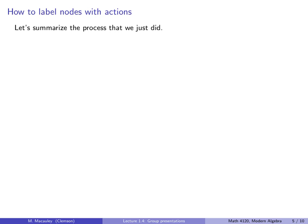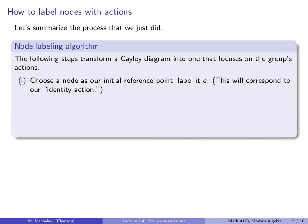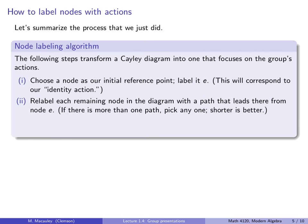Let's summarize the process that we just did. Let's call it the node labeling algorithm. The following steps transform a Cayley diagram into one that focuses on the group's actions. First of all, choose a node as our initial reference point and label it with E. This will correspond to our identity action. Next, relabel each remaining node in the diagram with a path that leads there from the node E. If there's more than one path, and there's typically a lot more than one path, pick any one. But generally, the shorter one is better. It's simpler.